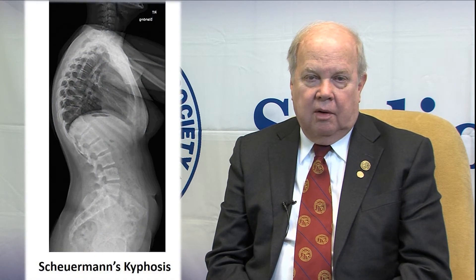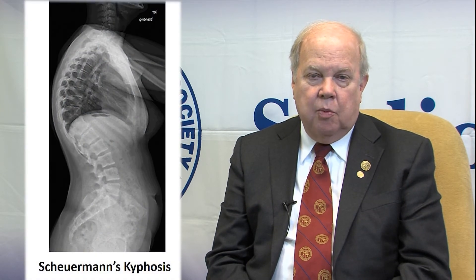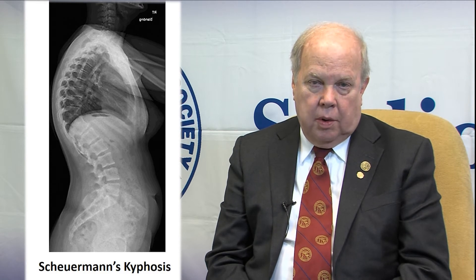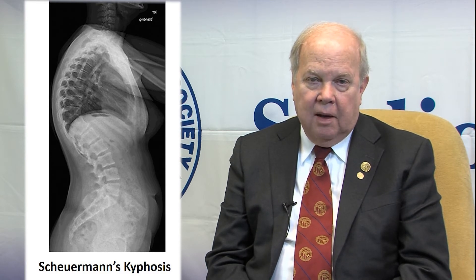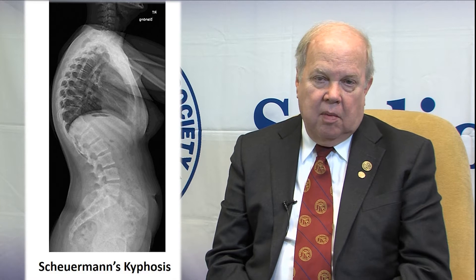Scheuermann's kyphosis, on the other hand, is a structural deformity. The vertebral bodies are abnormally shaped — they're narrower in the front and higher in the back, giving them a wedge-shaped appearance. This is a more structural deformity. It is rigid and usually will not correct very much by positioning. It is one that frequently may require more active treatment.